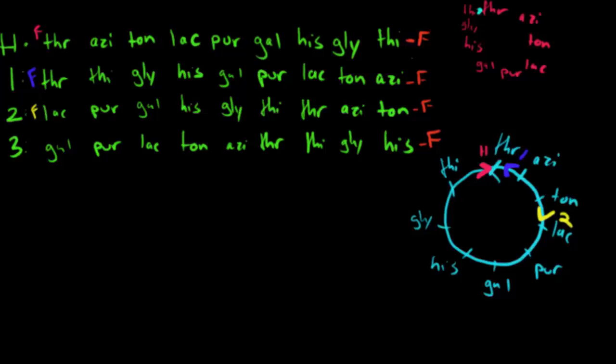And lastly, the third one. The F-factor is right here, behind GAL facing PUR. This should be strain three.